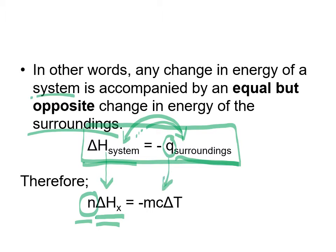Heat itself can't be measured directly, but we can measure properties of the surroundings to calculate it. Instead of just using q, we measure the temperature change of a particular mass of a particular substance with a known specific heat capacity. That gives us the heat moving in or out of the surroundings. The system is the chemical reaction or change of state, and we take measurements of the surroundings to determine whether energy is moving into or out of them.